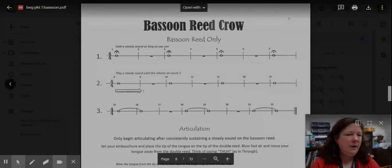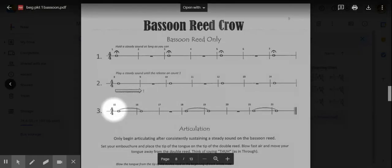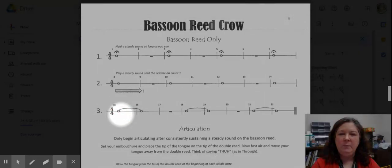So in line three, we're going to do exactly the same exercise, except this time we're just going to hold that crow for two full measures. This little curvy line right here is called a tie, and it means we're just going to tie this note and this note together. So instead of four beats and four beats, it's making eight total beats. So we're going to cut off right here at the beginning of measure 17.